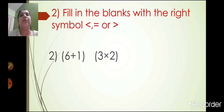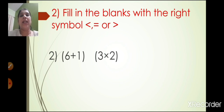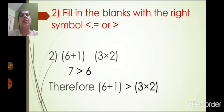The second one: 6 plus 1 and 3 into 2. Now 6 plus 1 is 7, and 3 twos are 6. So 7 is greater than 6. Therefore 6 plus 1 is greater than 3 into 2.